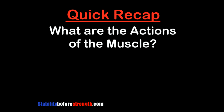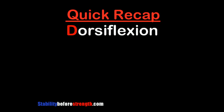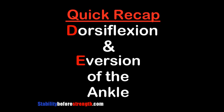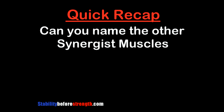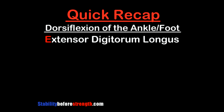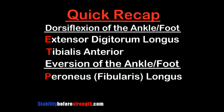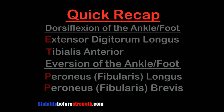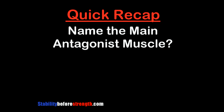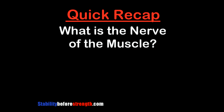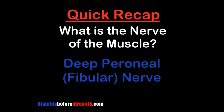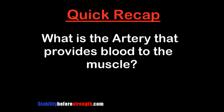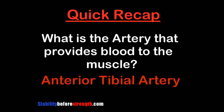What are the actions of the muscle? It dorsiflex and everts the foot. Can you name the synergist muscles? The extensor digitorum longus, the tibialis anterior, peroneus longus, and peroneus brevis. Can you name the main antagonist muscles? It doesn't really have any main antagonist muscles. What is the nerve? The deep peroneal or fibular nerve. And the artery? The anterior tibial artery.